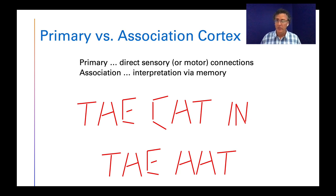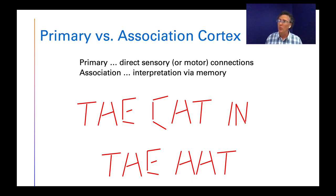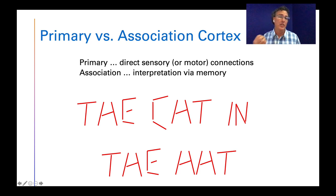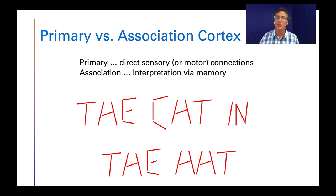A couple of things before we get into those specific areas. Almost every cortical area we'll talk about has a distinction between primary cortex and association cortex — and I really want you to get this distinction. Primary cortex is where the direct sensory information comes in. Like, if you're seeing something, what's the part of the brain that senses the raw input? That's the primary cortex. So we'll talk about primary auditory cortex and primary visual cortex.